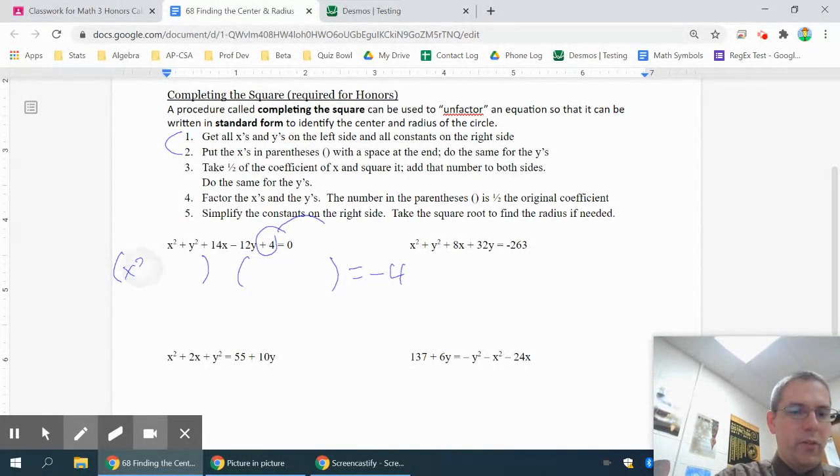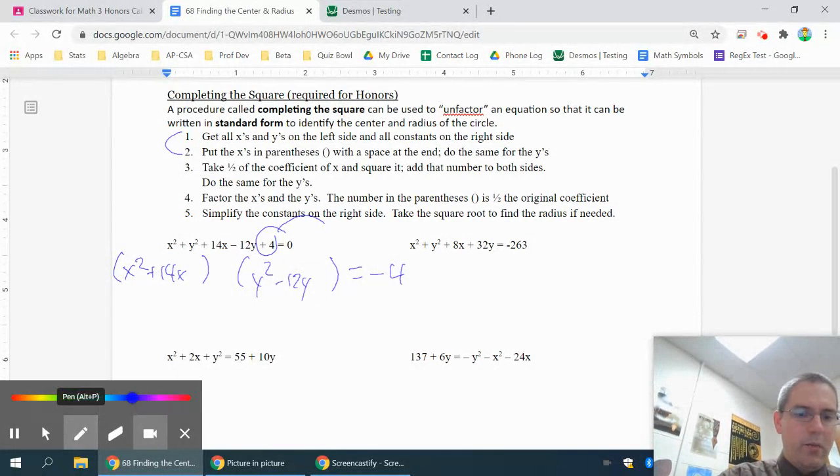And then what I'm talking about with grouping the x's and y's is I'm going to have an x squared plus 14x. And then I'm going to have a y squared minus 12y. Now the key thing here is I'm looking, the third step is the big thing.